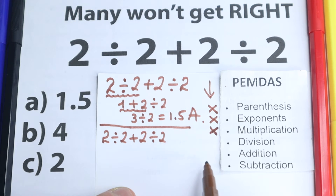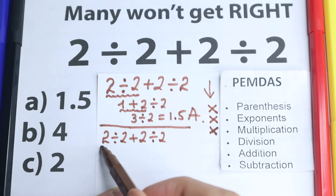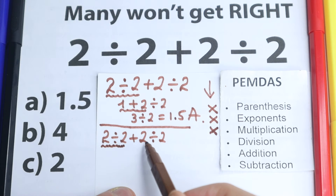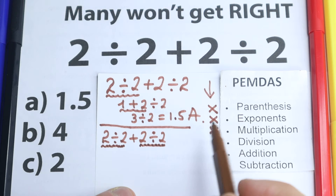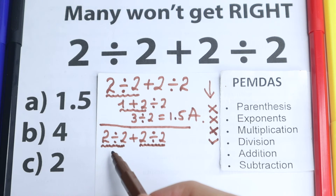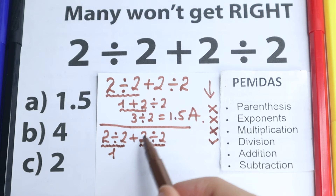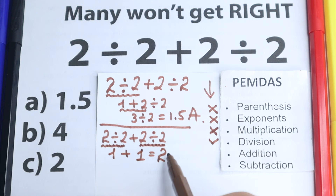The next step is division. Let's look at where we have these division signs. We have division right here on the left side, so we need this expression, and we have division right here on the right-hand side as well. So 2 divided by 2 equals 1, and 2 divided by 2 equals 1 as well. So according to PMDMC, a correct answer is 2, which is option C.